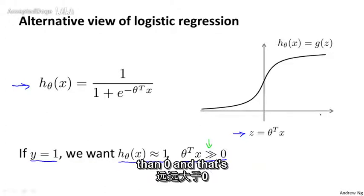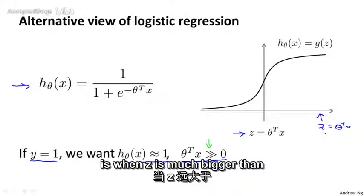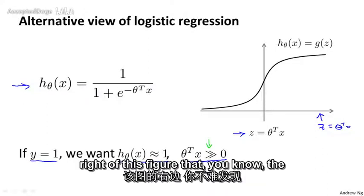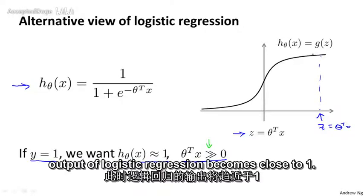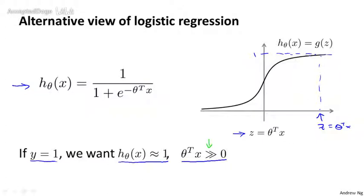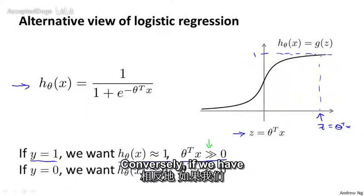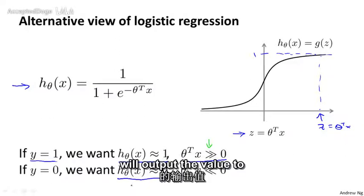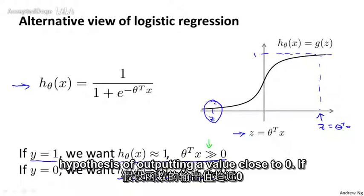If z — that is theta transpose x — is much bigger than 0, it's far to the right of the figure, and the output of logistic regression becomes close to 1. Conversely, if we have an example where y equals 0, we're hoping the hypothesis will output a value close to 0, and that corresponds to theta transpose x being much less than 0, because that corresponds to the hypothesis outputting a value close to 0.